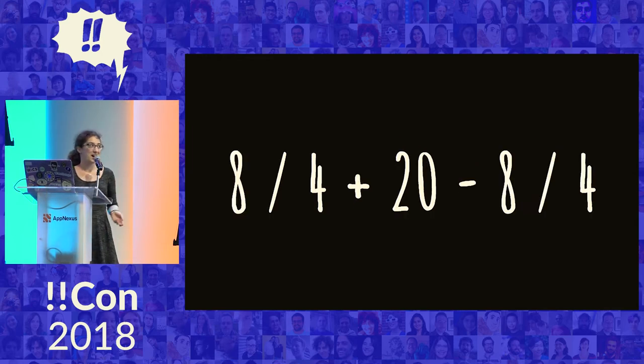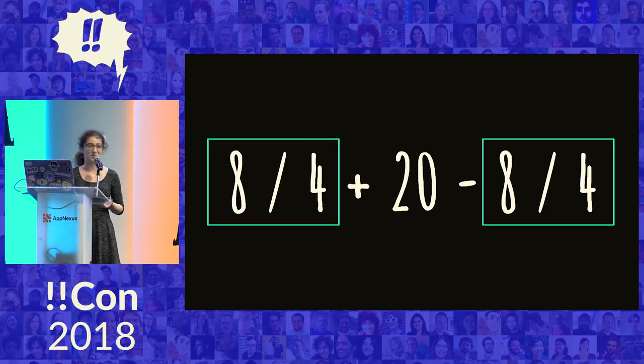Or for something like this, I know I don't even have to do the work of eight divided by four. The two eight divided by fours cancel each other out. And so I'm making patterns about math in my mind. And the question we're going to be talking about is, how can we get an algorithm or a computer to do these same patterns?